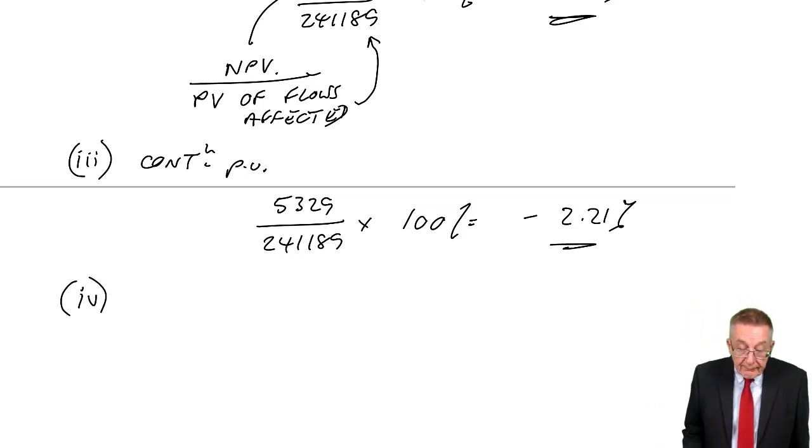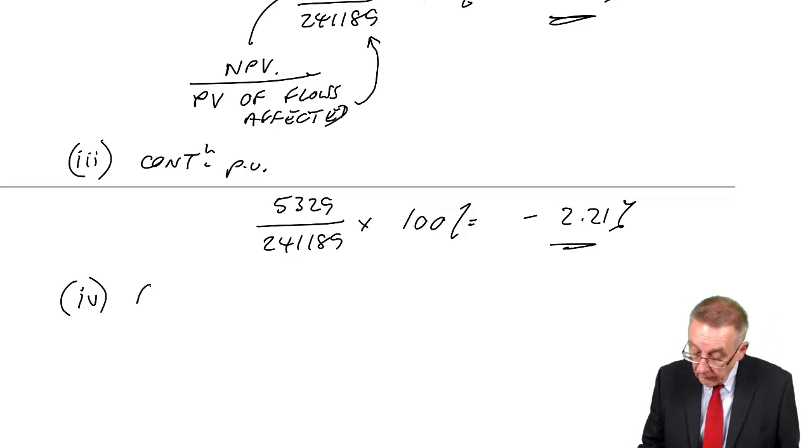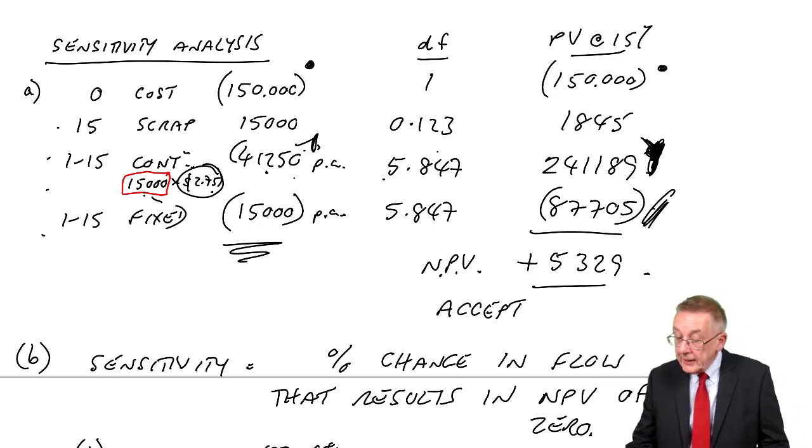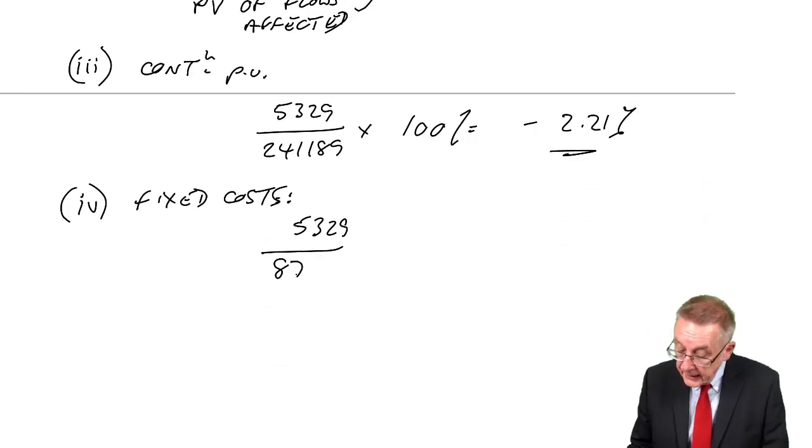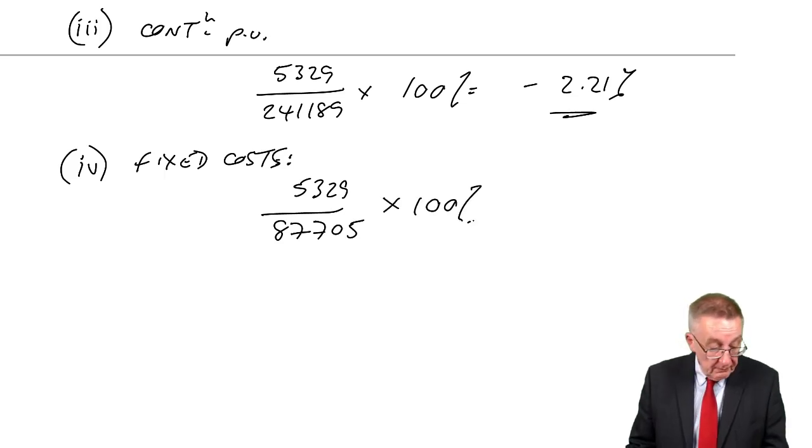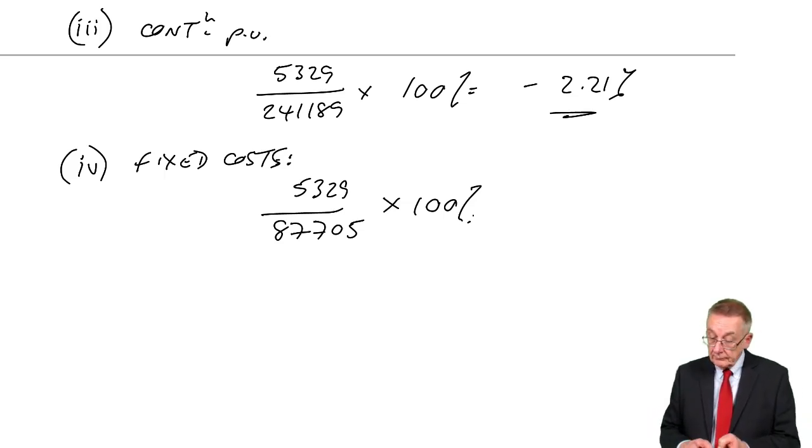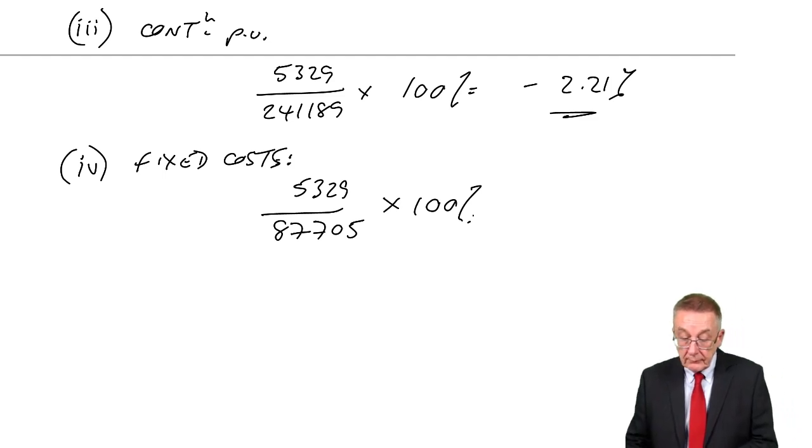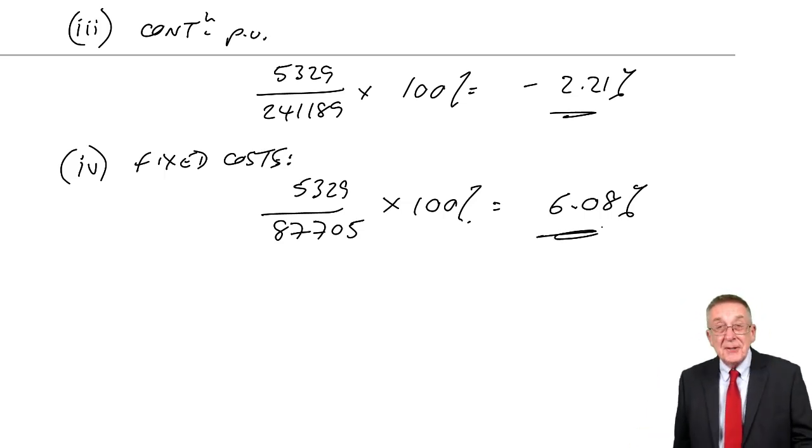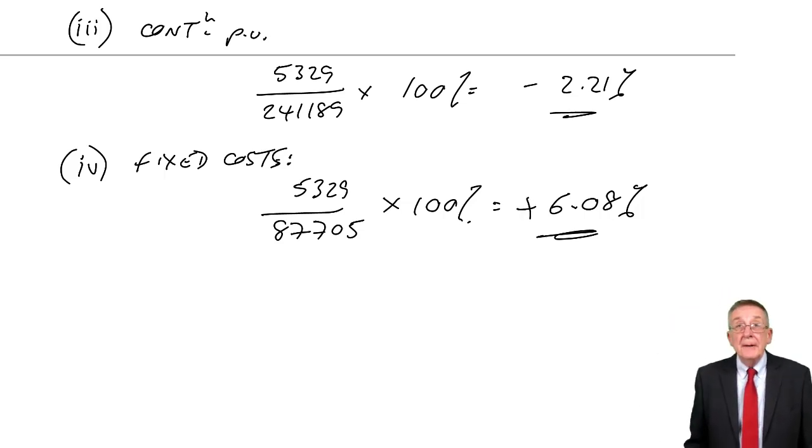What about number four, the fixed costs per year? It's the NPV 5,329. What's the present value of the flows affected? The present value of the fixed costs is 87,705. So 5,329 divided by 87,705, a sensitivity of 6.08%. Be careful about direction, because these are costs, we've only got a problem if these increase. If fixed costs are lower, the NPV gets better and better.